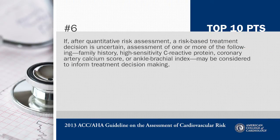Point six: if after quantitative risk assessment a risk-based treatment decision is uncertain, assessment of one or more of the following could be added — family history, high-sensitivity CRP, calcium scoring, and ankle brachial index. These added risk markers could be considered to inform treatment decision-making.